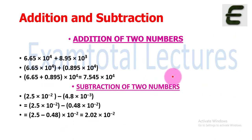For addition and subtraction, if you have to add two numbers like 6.65 times 10 raised to power 4 plus 8.95 times 10 raised to power 3, the exponent terms must be the same. If one is 10 raised to power 4 and the other is 10 raised to power 3, you need to make them the same before adding.